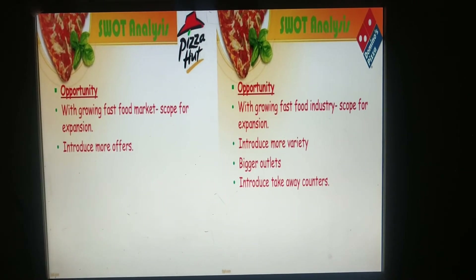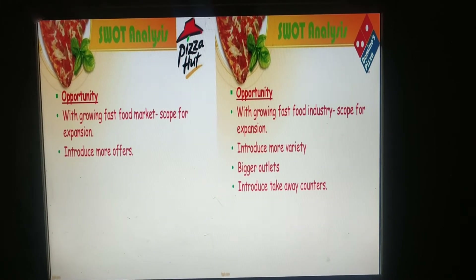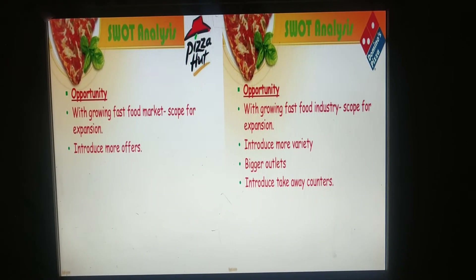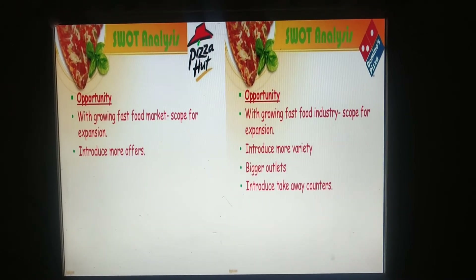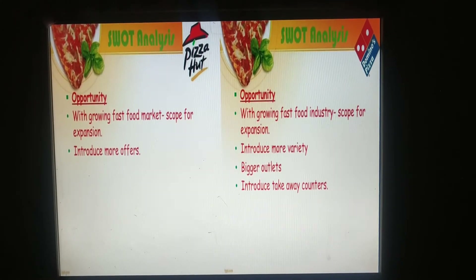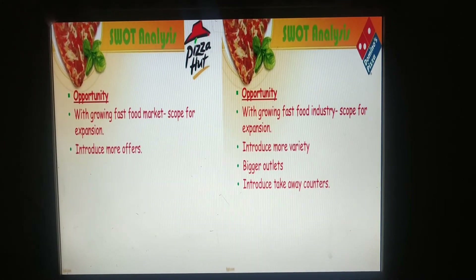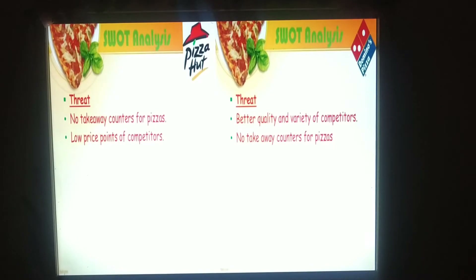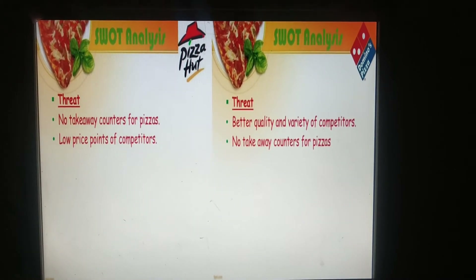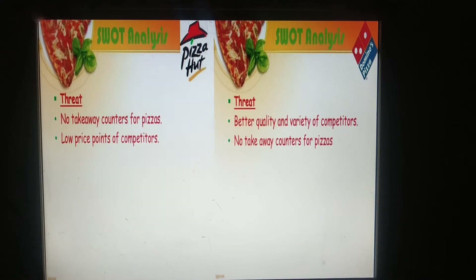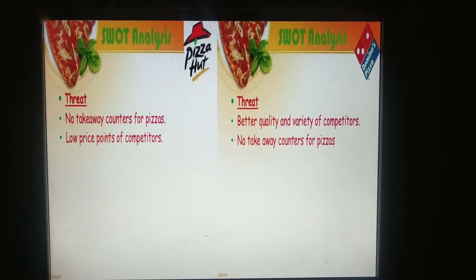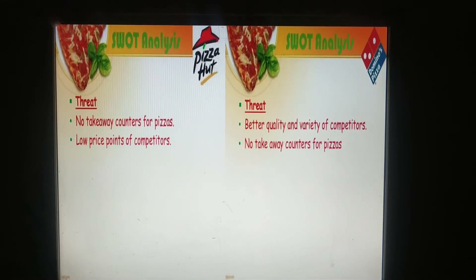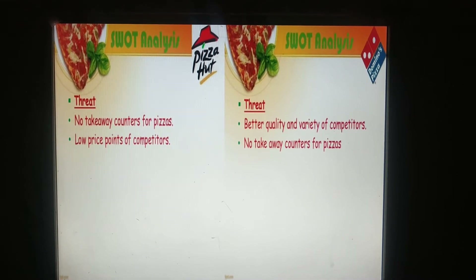The opportunities in the SWOT analysis: for Pizza Hut, with a growing fast food market there is scope for expansion and the ability to introduce more offers. For Domino's, with a growing fast food industry there is scope for expansion, introduction of more variety, bigger outlets, and takeaway counters. The threats for Pizza Hut include no takeaway counters for pizzas and low price points of competitors, while for Domino's the threats include better quality and variety from competitors and no takeaway counters for pizzas.